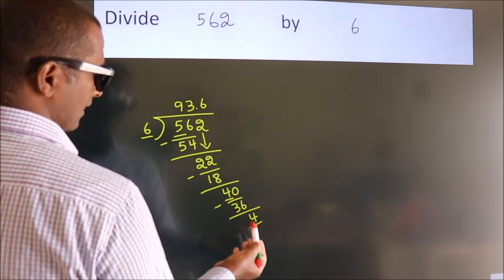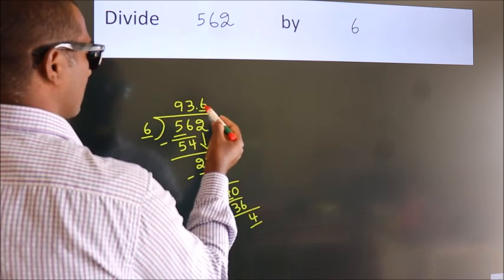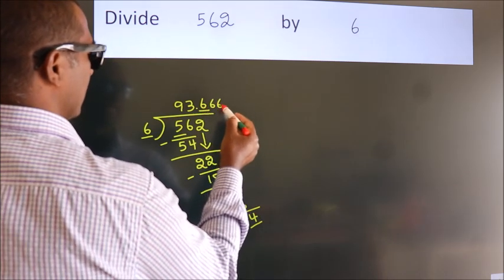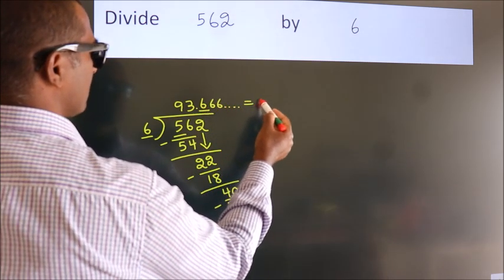...4 again. That means this number keeps on repeating. So this is our quotient: 93.6 repeating.